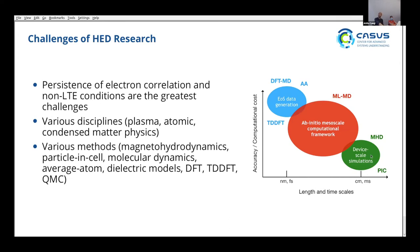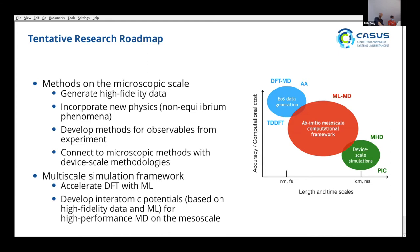Microscopic models — quantum Monte Carlo, time-dependent DFT, DFT-MD, average atom — work on length scales of nanometers and time scales of femtoseconds, down to the scale of electron dynamics. Continuum or plasma-physics methods like magneto-hydrodynamics and particle-in-cell work at the device scale — centimeters and milliseconds. There is a significant gap between these scales. One goal is to develop multi-scale modeling methods that bridge this gap, connecting the high accuracy of the microscale with the utility of the macroscale, for example using machine learning with molecular dynamics.